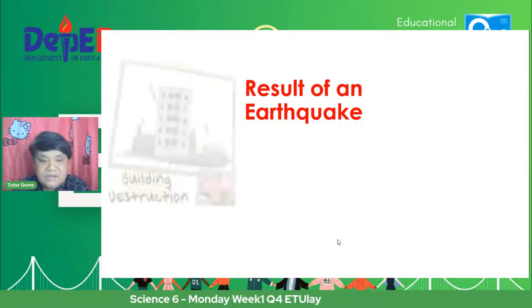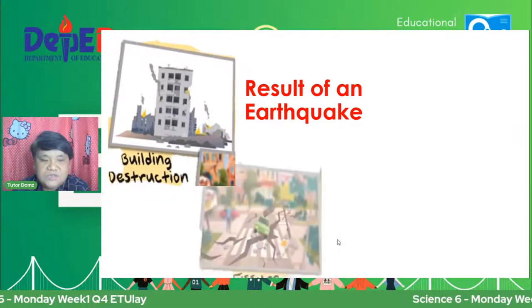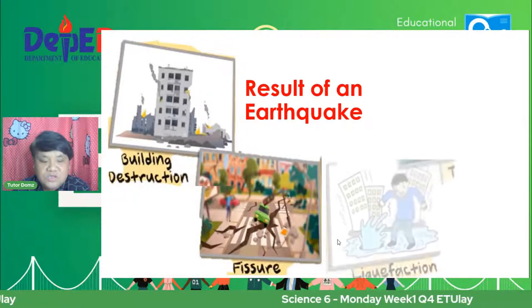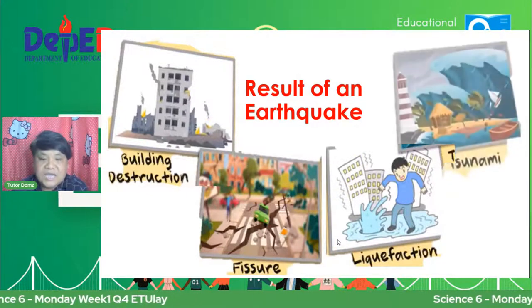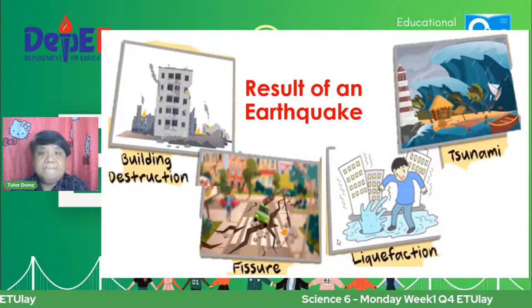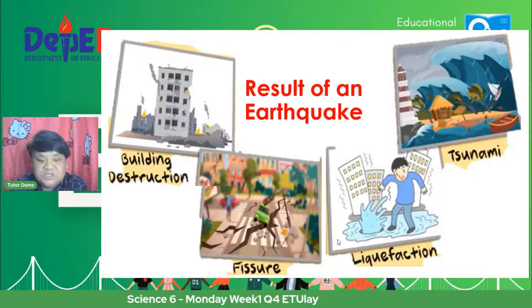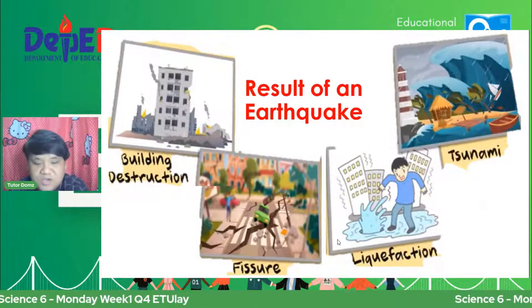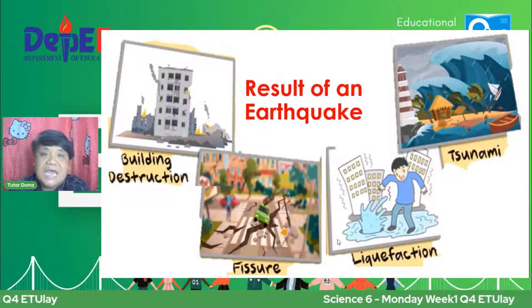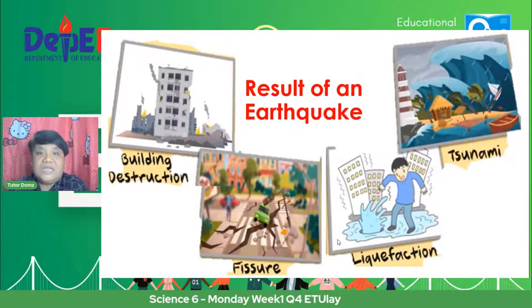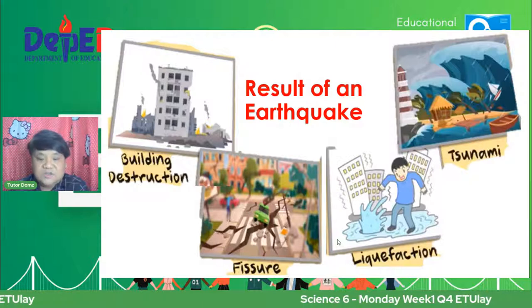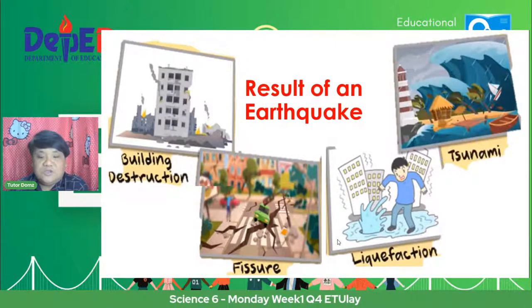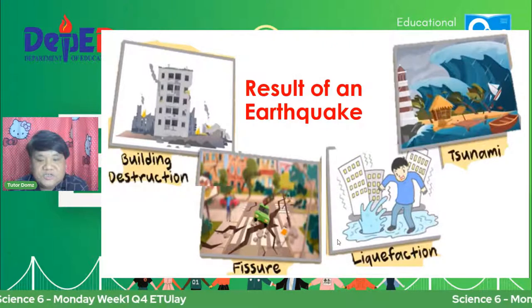Eto yung resulta ng earthquake. Pagka nagkaroon ng earthquake, resulta niyan yung building destruction, yung fissure o yung pagbitak-bitak. Nakikita ang fissure sa epicenter ng isang lindol — kung saan nag-start yung lindol, dun yung fissure. Isa pa yung liquefaction — ang ilalim ng lupa niya ay tubig. Pagka nagkaroon ng lindol, yung lupa ay bababa at maglalabas ng tubig. And of course, ito yung pinaka-nakakatakot natin — the tsunami. Yan yung mga resulta ng earthquake.